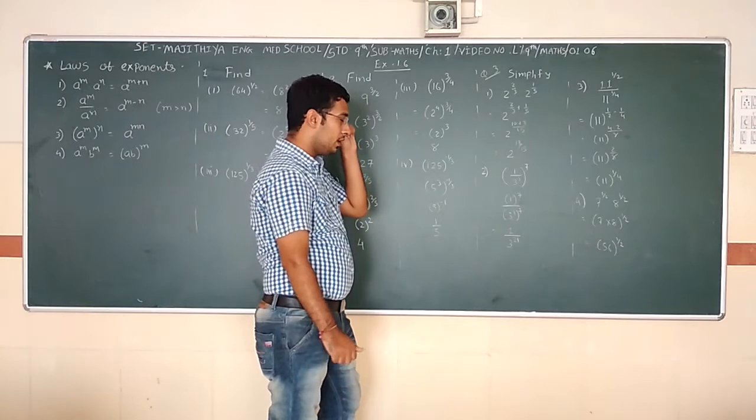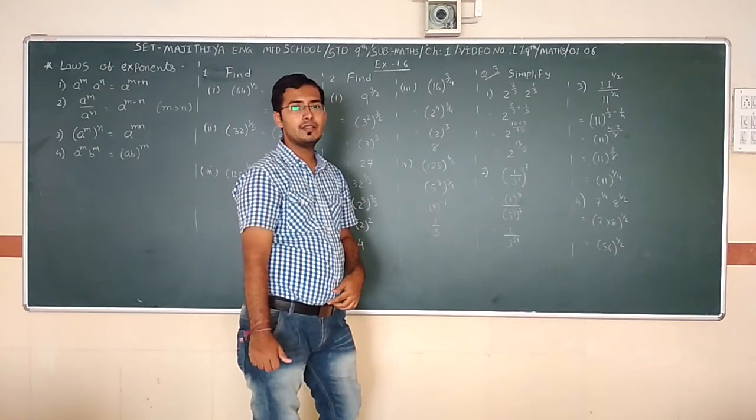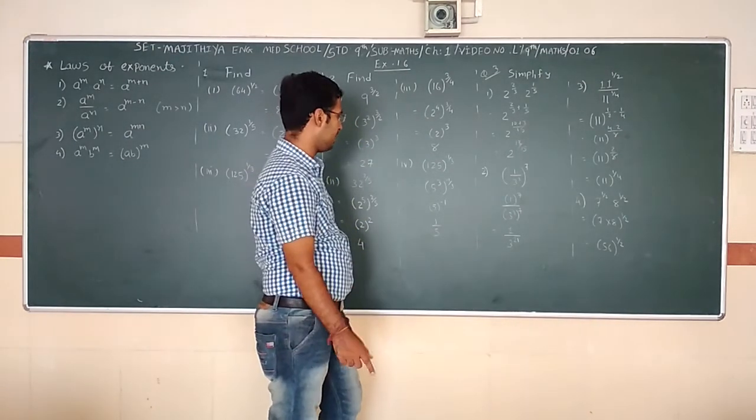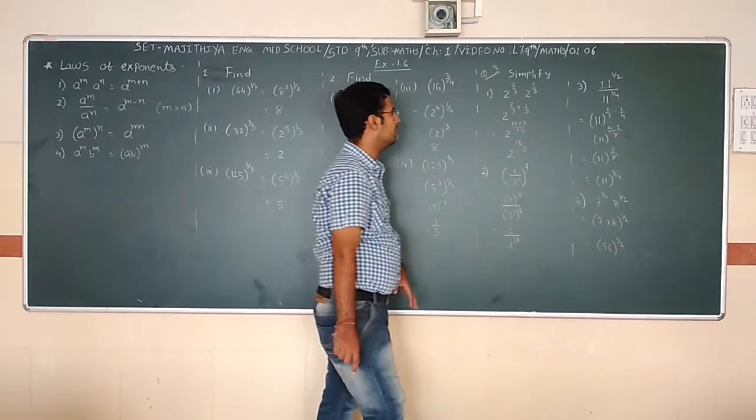We know the formula: a^(-m) = 1/(a^m). So here, 5^(-3) = 1/(5³) = 1/125.